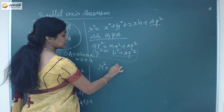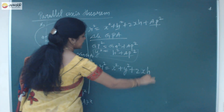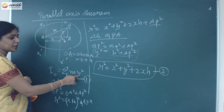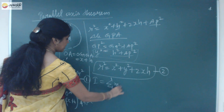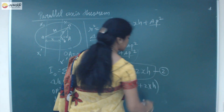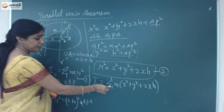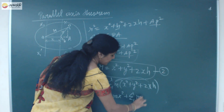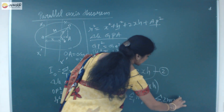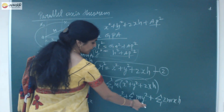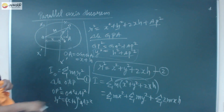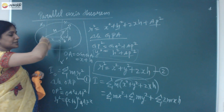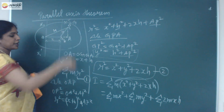Substituting R² = X² + Y² + 2Xh into equation 1 (Σ mR²): I = Σ m(X² + Y² + 2Xh), which expands to Σ mX² + Σ mY² + Σ 2mXh. Here Σ mY² is the moment of inertia about the axis passing through the center of gravity for particles at distance Y.